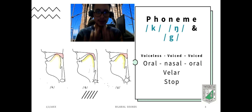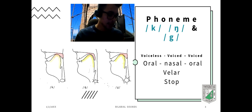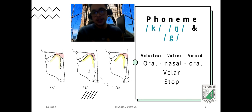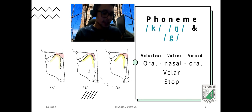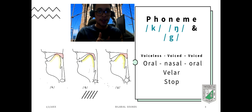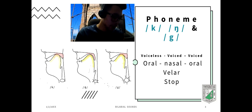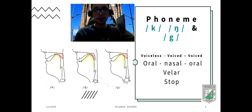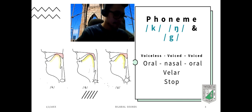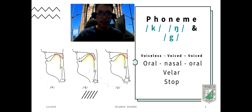The air comes through the nose, not directly to the mouth. The last one, which is the g, is oral. Basically, these are velar sounds and stops, which means the air stops. The first one that looks like a k is pronounced something like [k].